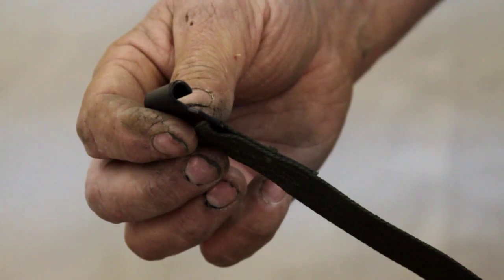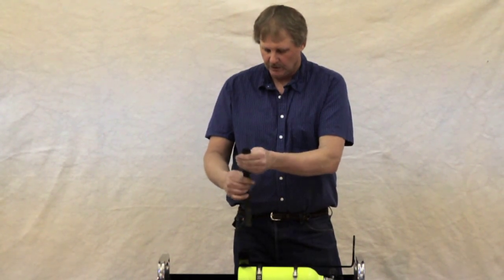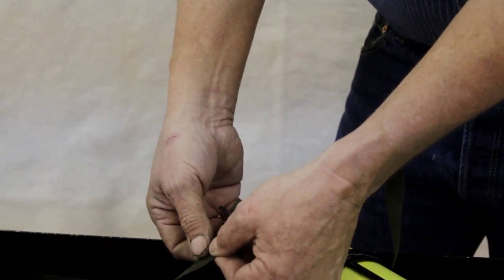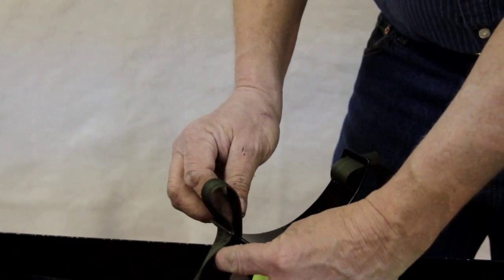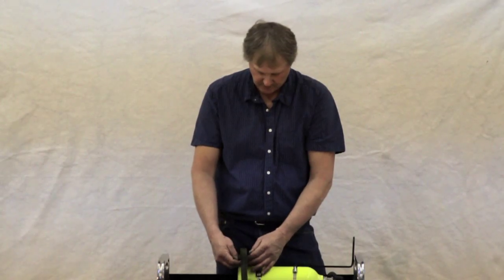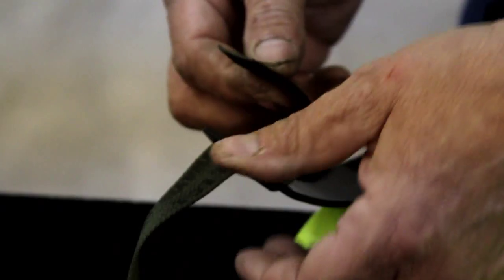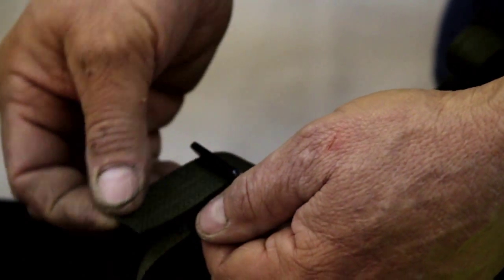You start with the hook outward. Start from the outside. Weave it in. Back out. Back through. Back in. That's one buckle.